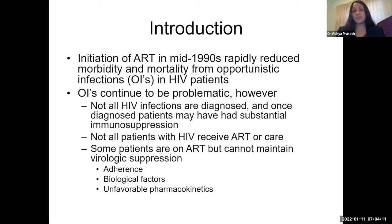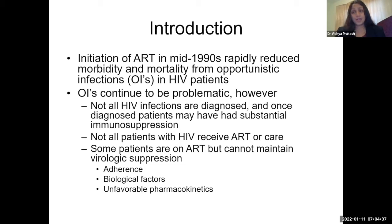First, not all HIV infections are diagnosed, and a large proportion of those patients who haven't been diagnosed for many years may already have had substantial immunosuppression, which contributes to the morbidity and mortality of OIs. Second, not all patients with HIV receive ART or the care they need and deserve. Third, some patients may be on ART but are unable to maintain virologic suppression, which directly impacts morbidity and mortality from opportunistic infections — due to non-adherence, biological factors, unfavorable pharmacokinetics, and more.